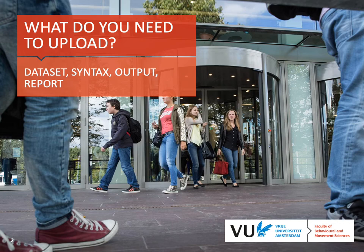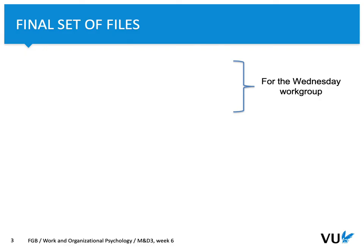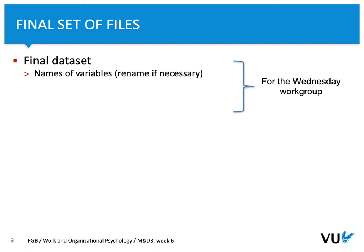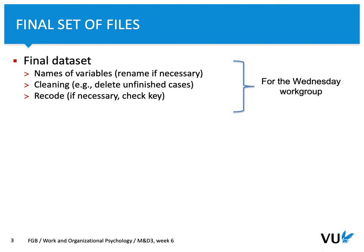What do you need to prepare for Wednesday? First, let's see what should be in a dataset. Name the variables and make sure those names are meaningful. Rename those variables if necessary. Clean the dataset, delete finished cases, and recode if necessary. For instance, if you have used a self-control scale, some of the items need to be reversed — that's the procedure of recoding.